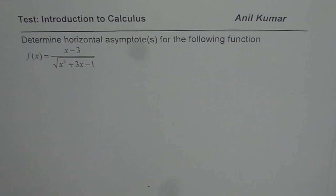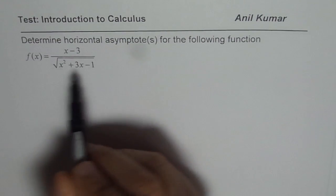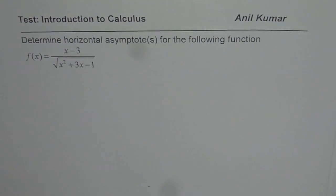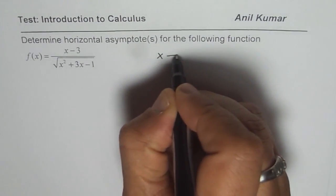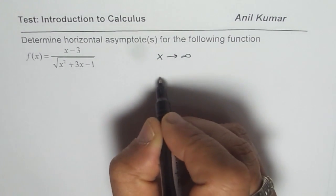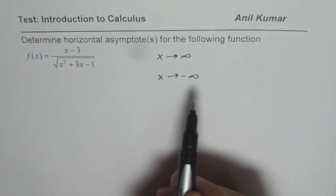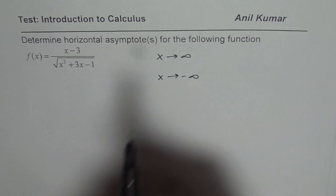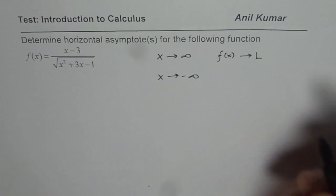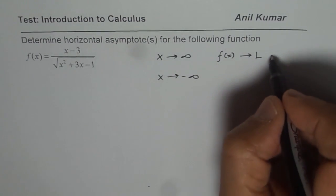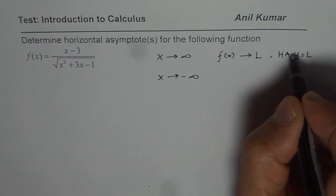Here is my suggestion. When I say determine horizontal asymptotes for the following function, what do I mean? For a horizontal asymptote, we need to see the behavior of the graph as x approaches positive infinity or negative infinity. We say a horizontal asymptote exists if f(x) approaches a value L, in which case the horizontal asymptote is the line y equals L.